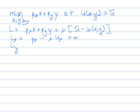L sub y, the partial Lagrangian with respect to y, is p sub y minus mu u sub y. That equals zero.